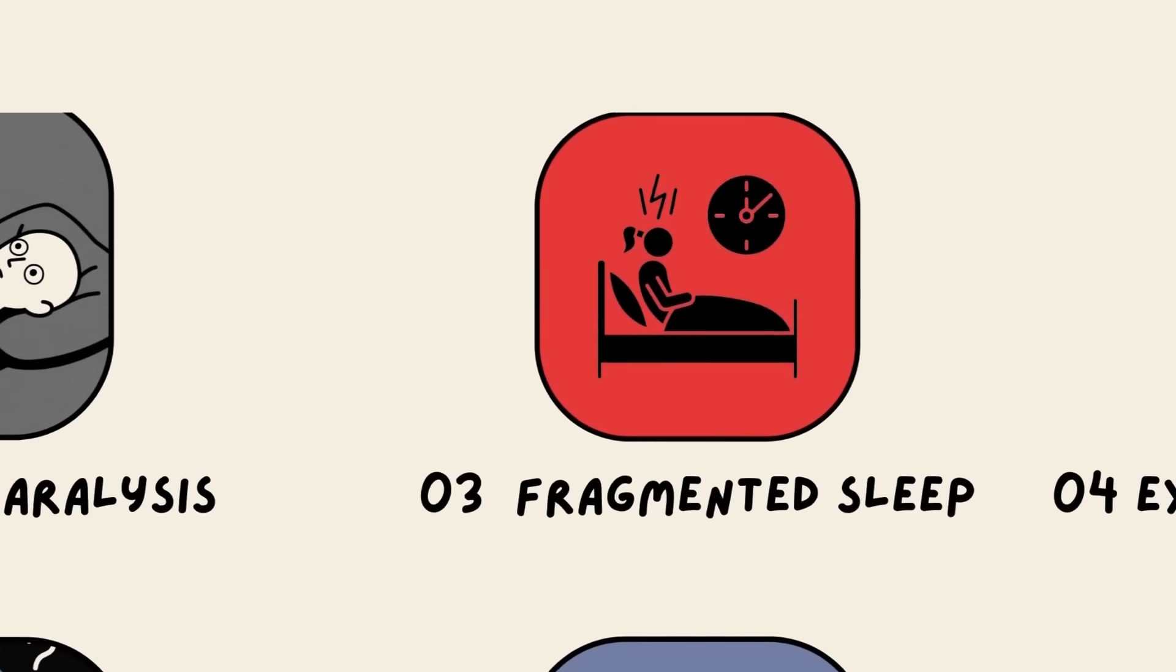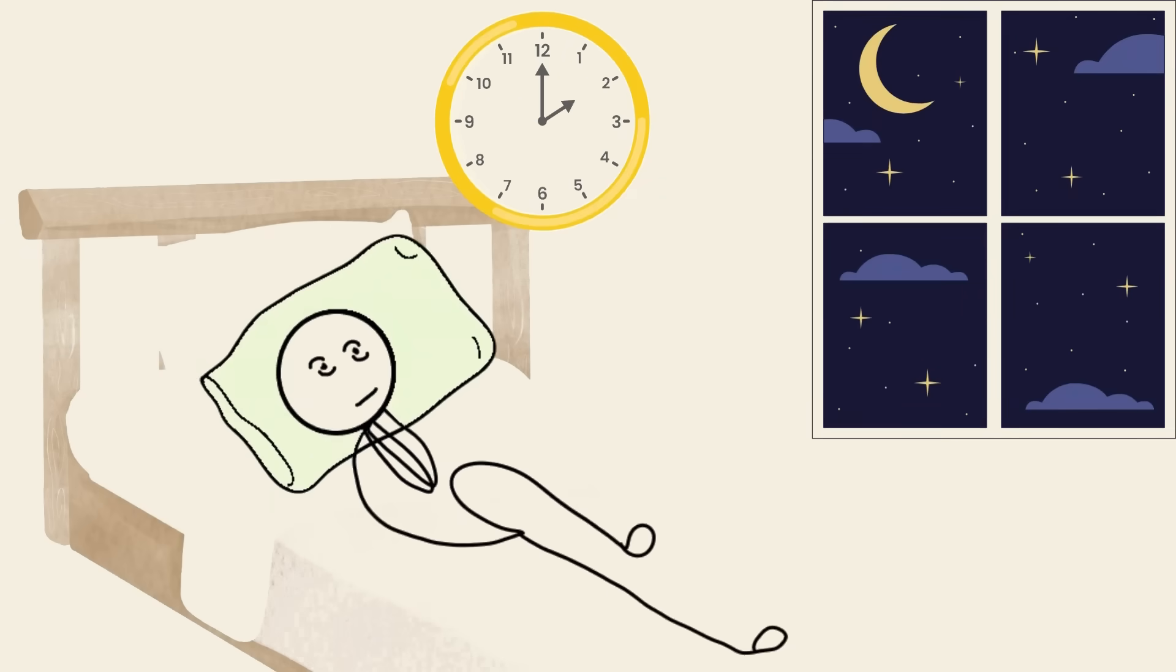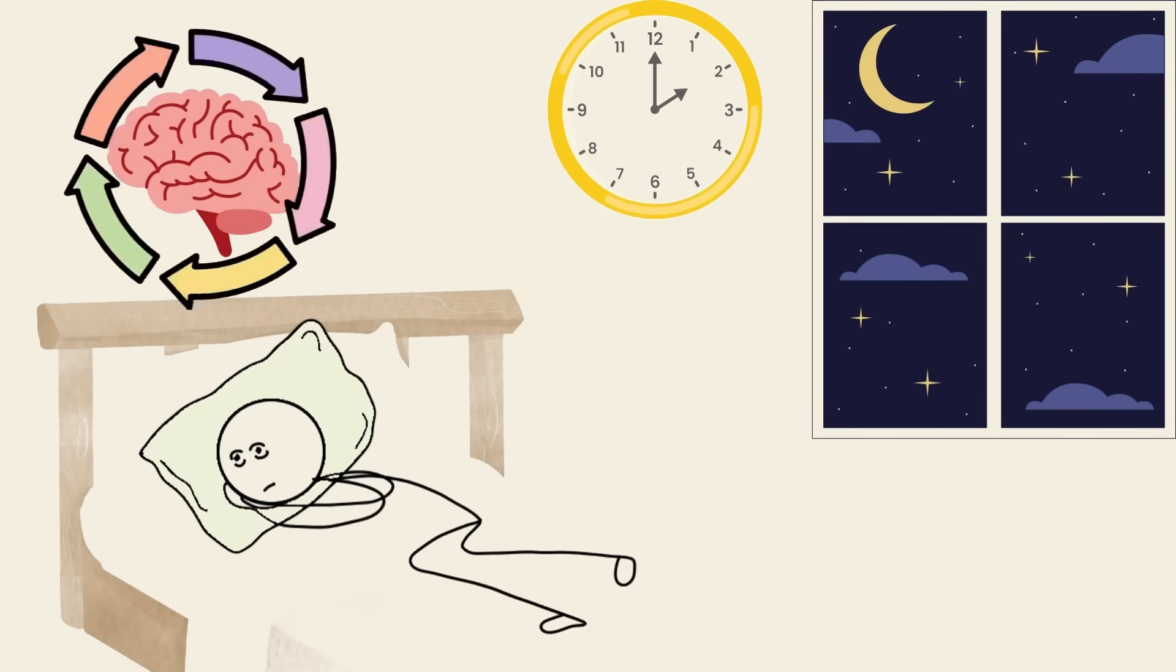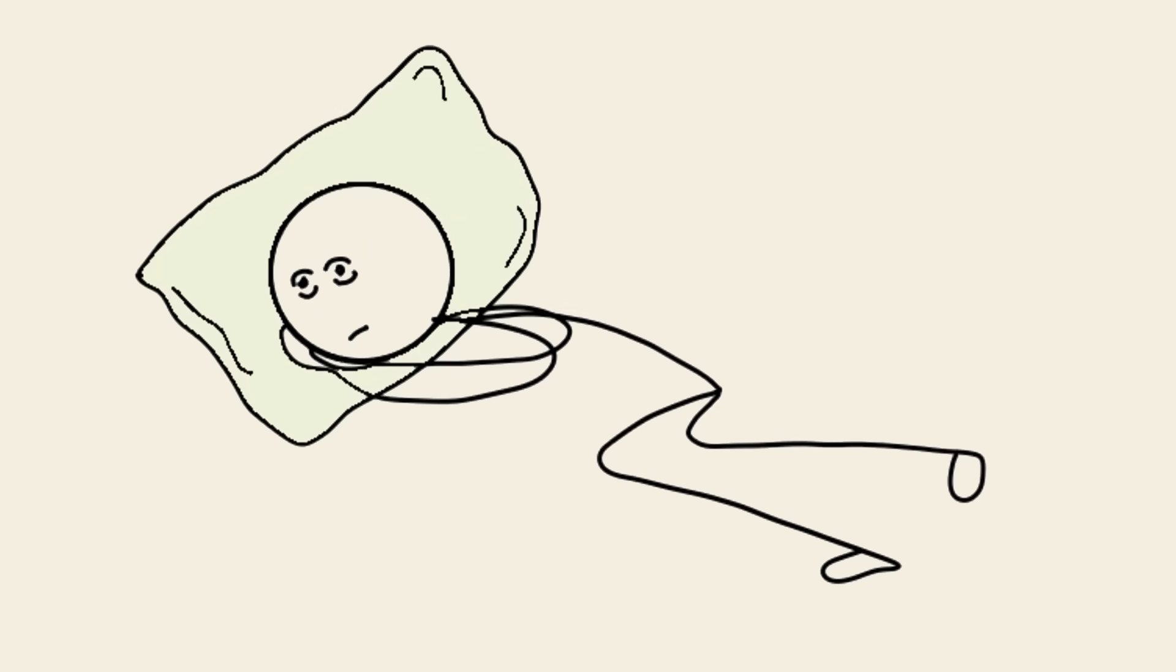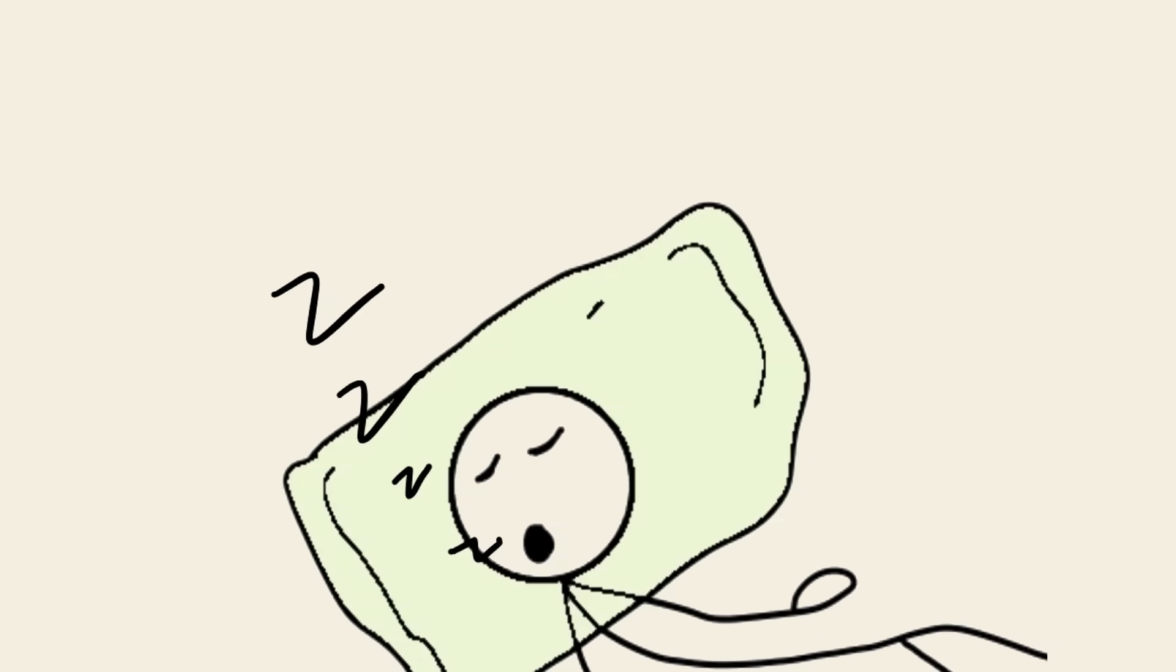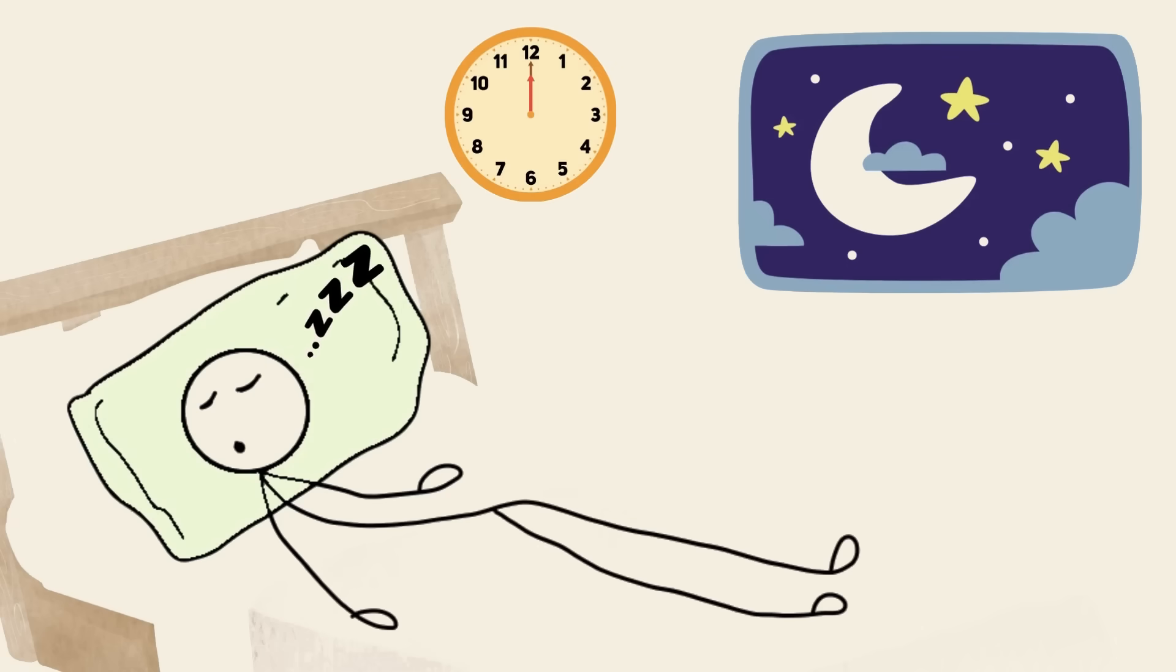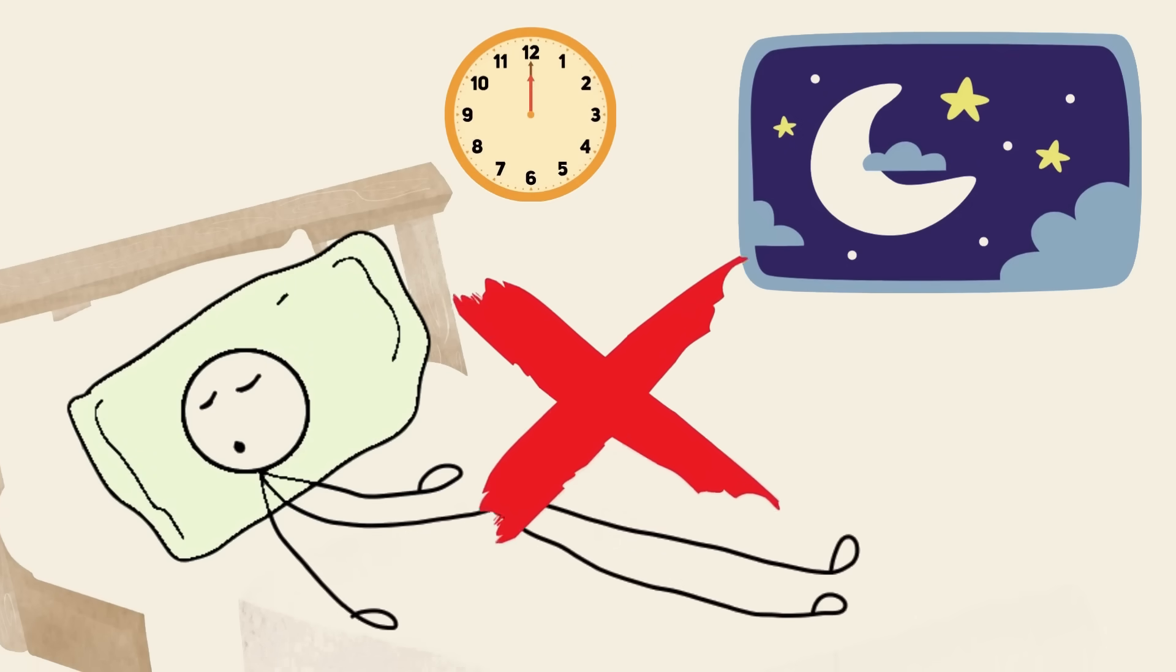Fragmented sleep. Ever woken up multiple times in a single night feeling like your brain is rebooting in loops? That might be fragmented sleep, and it's a glitch that hides in plain sight. Your body technically rests, but your sleep keeps breaking into fragments, never allowing you to sink into the deeper, restorative phases.